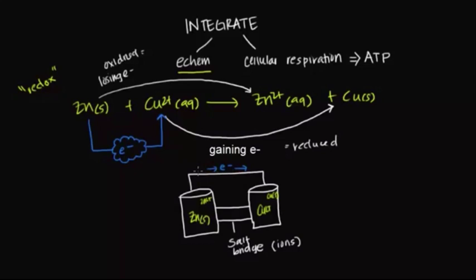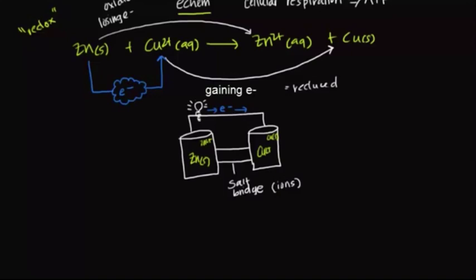Here's the most important point: in our body, we also isolate a flow of electrons during cellular respiration. But instead of lighting up a light bulb, we harness this flow of electrons to produce chemical energy in the form of ATP. Let's look at the overall reaction for cellular respiration — specifically the breakdown of glucose. Glucose has the chemical formula C₆H₁₂O₆, and even though it's broken down in many multiple steps, the overall reaction is glucose combining with oxygen to produce water and carbon dioxide.